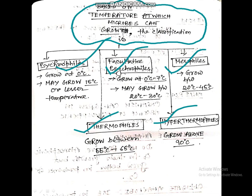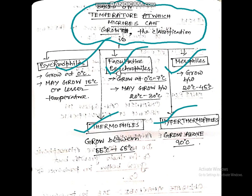Based on the temperature at which microbes can grow, they are classified as psychophiles, facultative psychophiles, mesophiles, thermophiles, and hyperthermophiles. Psychophiles grow at 0°C and may grow up to 15°C — maximum temperature they withstand is 15°C. The optimum temperature for psychophiles is 0 to 15°C.